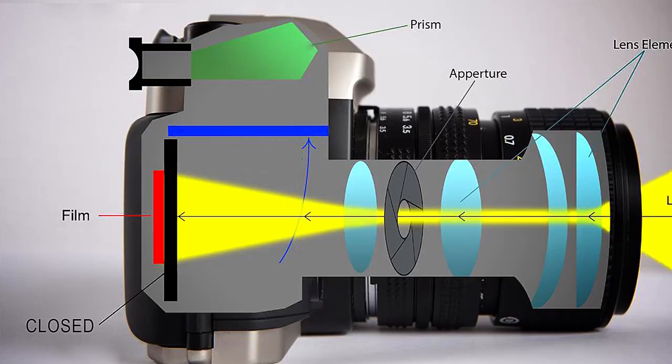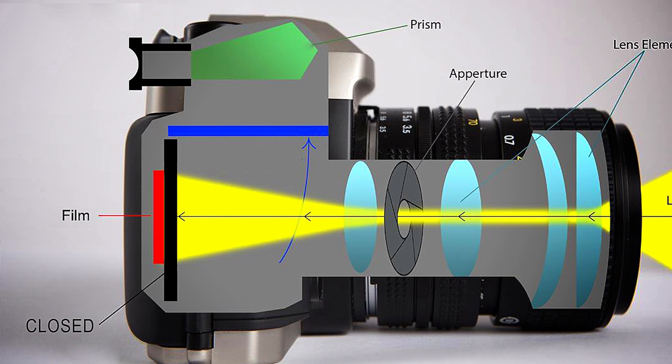So what about shutter speed? A photography film camera does the following: you press the button to take a shot, the shutter opens for a set amount of time, the image is burned on the film, and then the shutter closes. That's for a single picture.